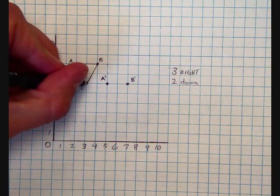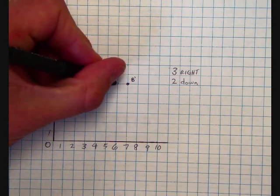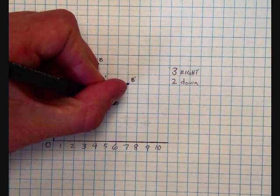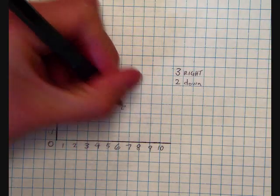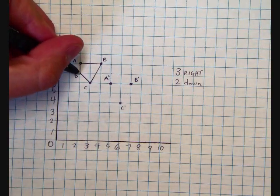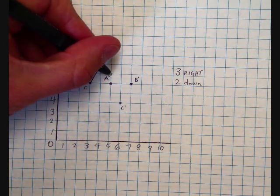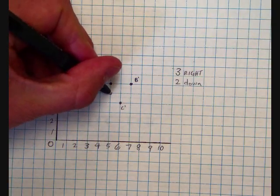Same thing with our C. 1, 2, 3, 1, 2. Here's our C point, C prime, and then D, 1, 2, 3, 1, 2. And this is D prime.